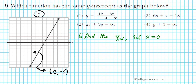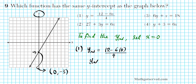We're going to plug in x equals 0 into each answer choice and check which one gives y equals negative 3. Starting with option 1: the y-intercept is (12 minus 6 times 0) divided by 4, which is 12 over 4, equals 3. That's not negative 3, so option 1 is incorrect.